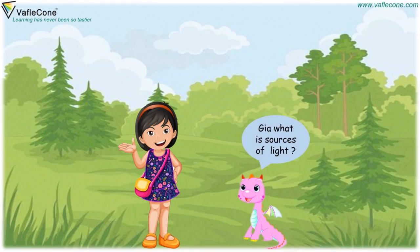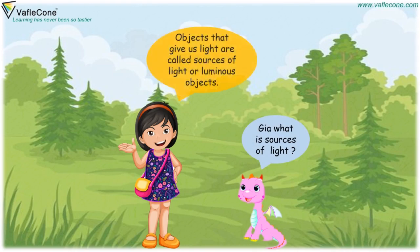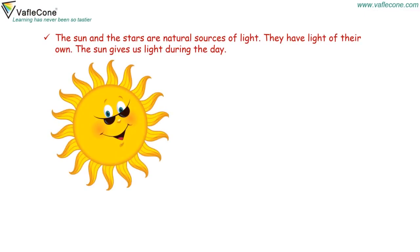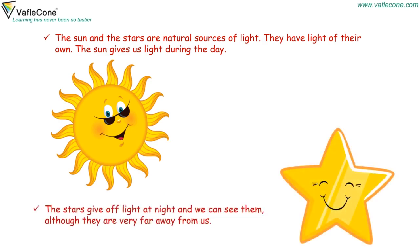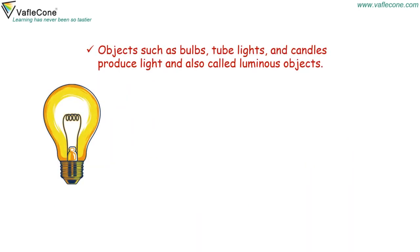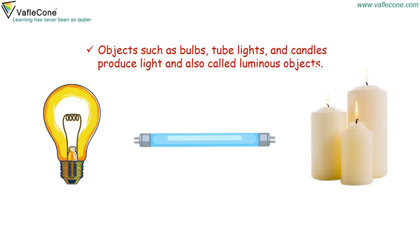Jia, what are sources of light? Objects that give us light are called sources of light or luminous objects. The sun and the stars are natural sources of light. They have light of their own. The sun gives us light during the day. The stars give off light at night and we can see them, although they are very far away from us. Objects such as bulbs, tube lights and candles produce light and are also called luminous objects.